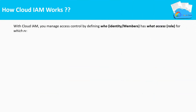Let us see how Cloud IAM works. Cloud IAM needs to give access to the persons or identities who need to access GCP. So what is identity? It is the unique representation of a user which is used to access the resources of GCP. Usually these identities will have a username and password to access GCP resources.